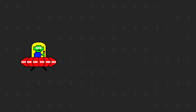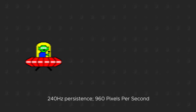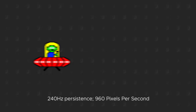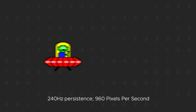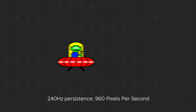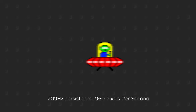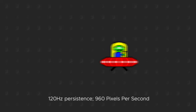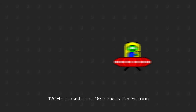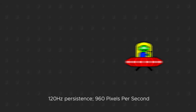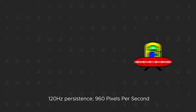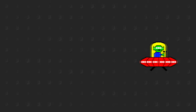So the higher the refresh rate, the less image persistence a monitor will have, which means you'll have a clearer moving image. The lower the refresh rate, the more image persistence a monitor will have, which means you'll get a more blurry image.